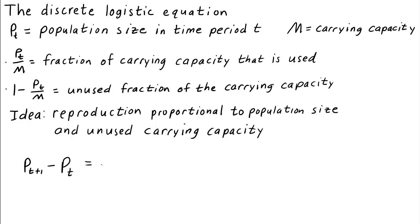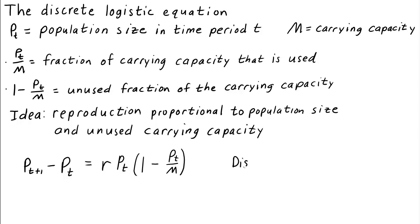We make the change proportional with proportionality constant r to the population size p_t. If we left the equation like this, we would have the old exponential growth model, but we also make the population increase proportional to the unused carrying capacity, 1 minus p_t over m. With this change, the population growth will slow down when p_t gets closer to m. This equation is one form of the discrete logistic equation.